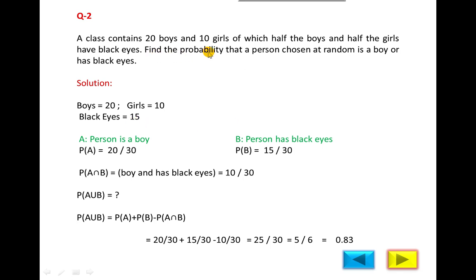Find the probability that a person chosen at random is a boy or has black eyes. Same as the previous question, there are two parts of the condition: boy or has black eyes. So first we will define the event. Suppose A is person is a boy, B is person has black eyes.